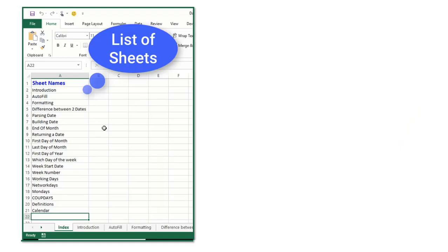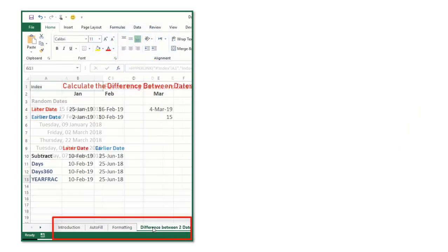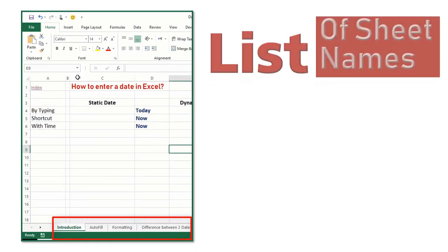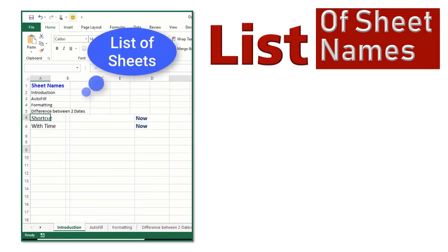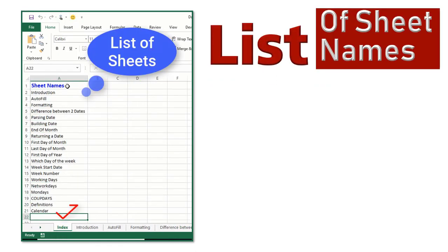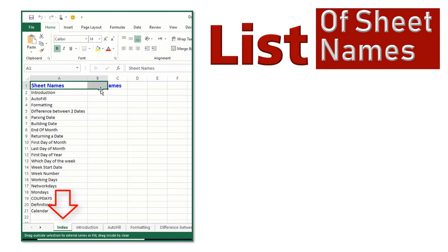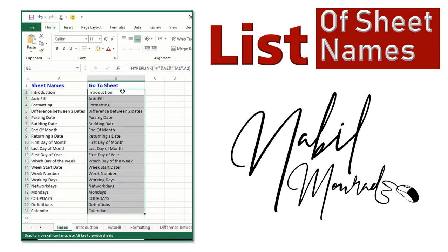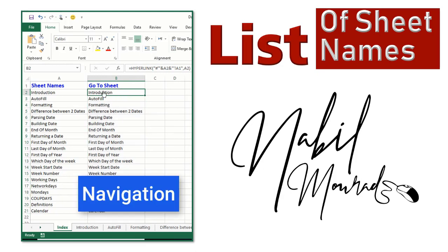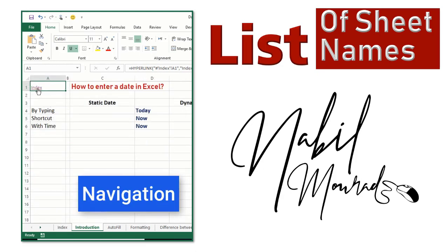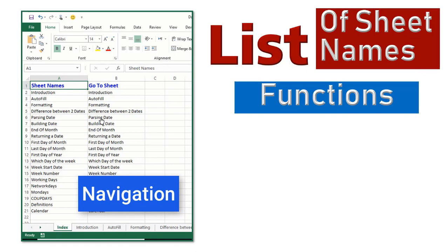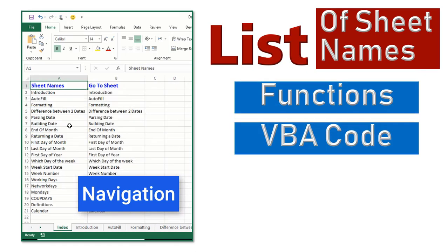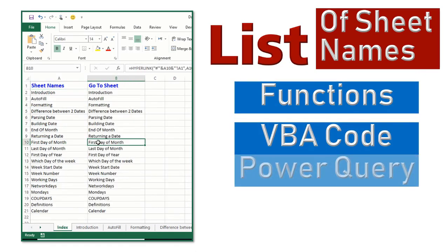When you create a workbook with a large number of worksheets, it's very useful to create a worksheet with a list of all sheet names. You may call it a table of contents or an index, and then create a forward and backward navigation from the index to different worksheets and back. I'm Nabil Murad. There are three different ways of doing this: either by using functions, by using a VBA code, or by using Power Query.